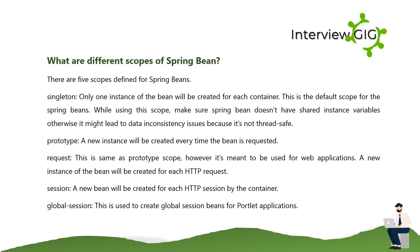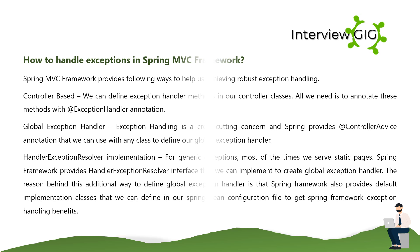Request — this is the same as prototype scope but is meant to be used for web applications; a new instance of the bean will be created for each HTTP request. Session — a new bean will be created for each HTTP session by the container. Global Session — this is used to create global session beans for portal applications.